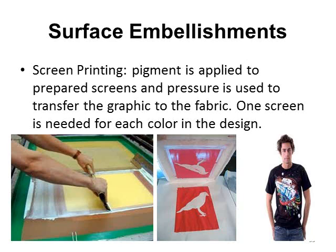Screen printing is when pigment is applied to screens that have designs in them, and then pressure is used to transfer the pigment to the shirt. In this first step you can see the yellow being screen printed onto a green shirt. This shows the screen being lifted after printing, and the last example is the completed project. Each color requires a different screen, so this shirt probably had 10 or 12 different screens to achieve all its colors.